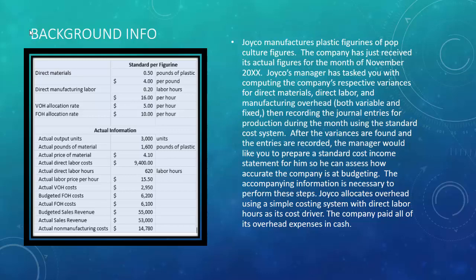We're going to need our standards. For Joico, the standard amount of direct materials used per figurine is a half pound of plastic, and plastic costs $4 per pound. For labor, they're budgeting 0.2 labor hours to make each figurine, and each laborer makes $16 per hour. Variable overhead is allocated at $5 per hour, and fixed overhead at $10 per hour.